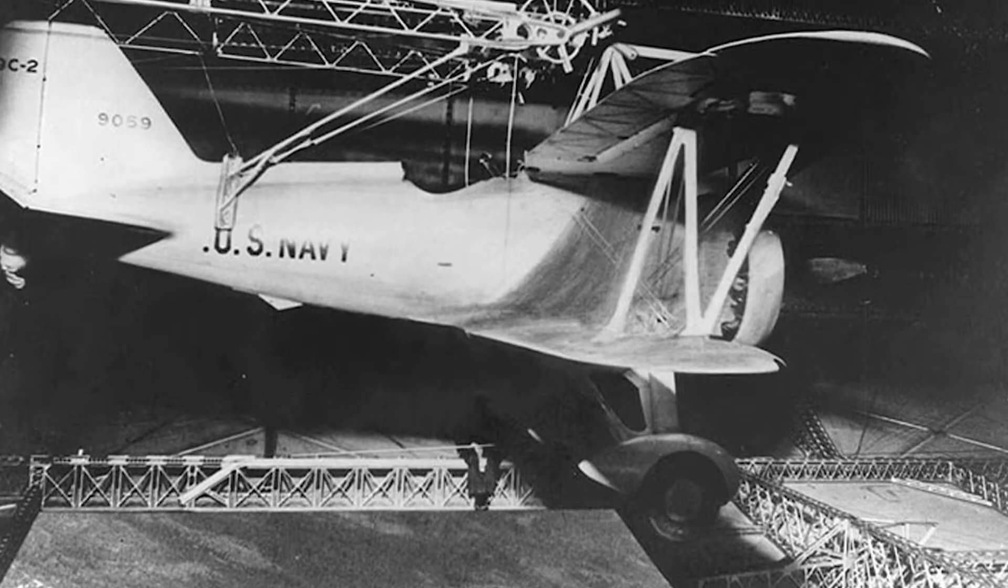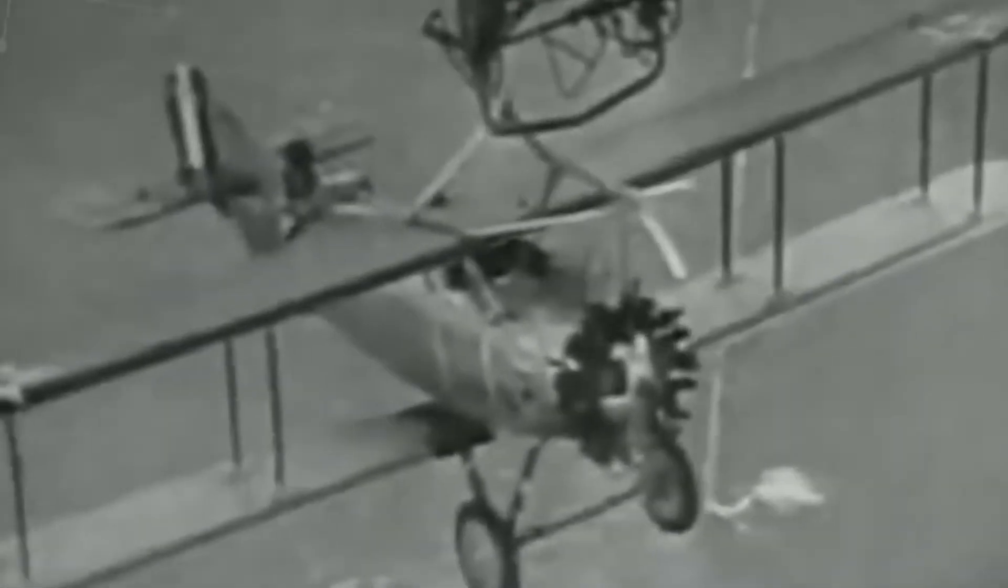To extend the range that they could scout, they were designed to be able to deploy and collect planes midair. They could hold five fighter biplanes inside and used a long arm with a hook to lower planes out of the airship, where they would then take off. Upon returning, the planes would hook onto the trapeze attached to the arm and get hoisted back into the airship.